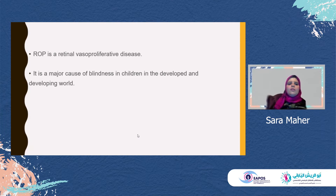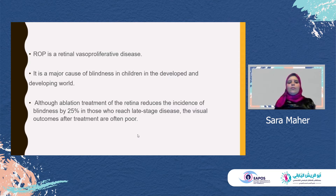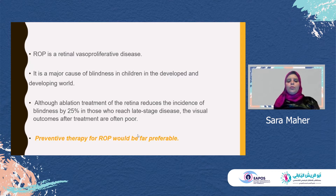ROP is a retinal vasoproliferative disease. It is a major cause of blindness in children in the developing world. Although the ablation treatment of the retina reduced instances of blindness by 25% in those who reach late-stage disease, the visual outcomes after treatment are often poor. So preventive therapy for ROP would be far preferable.